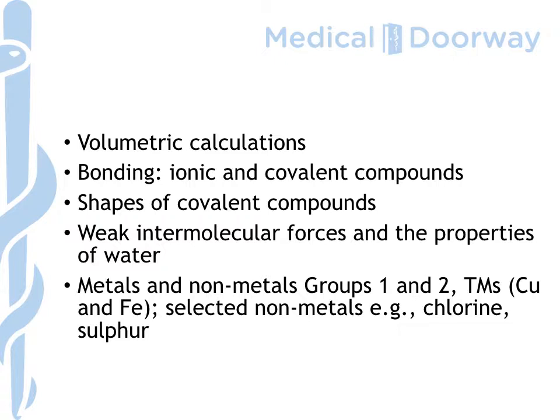We'll look at bonding — ionic and covalent in particular — and shapes of covalent compounds. This is an area that students often find difficult, so we're going to take a different approach. We're going to look for a pattern or trend to help us learn the different shapes, and that pattern is to do with the group that the central atom belongs to.